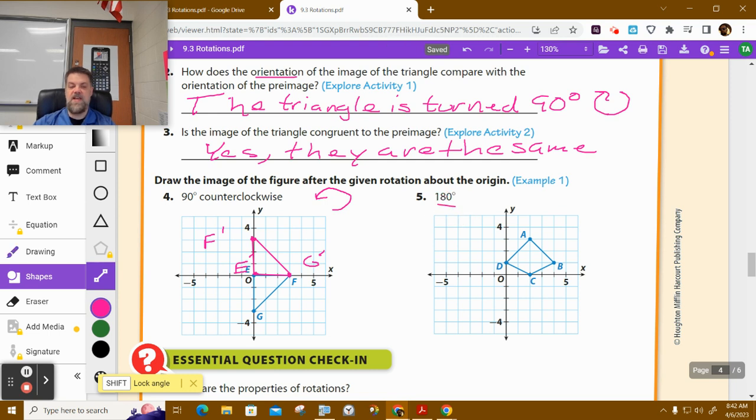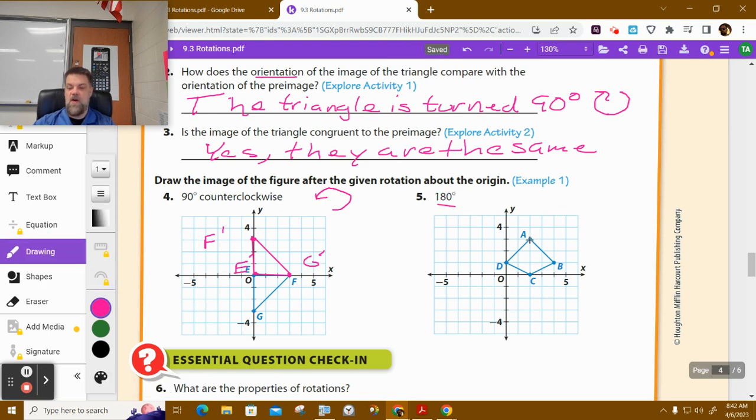This one, we got to rotate 180 degrees, kids. So A is here. 180 degrees will go way over here. And you can do this too. This is a trick that they teach you in high school. The point here is 2, 3. So now it would be negative 2, negative 3. That's my A prime.